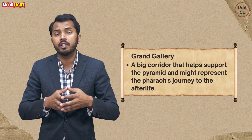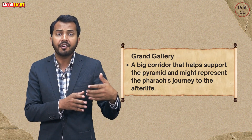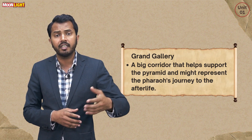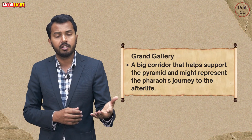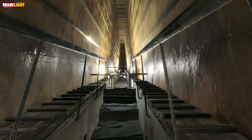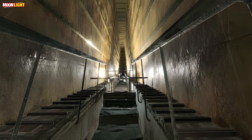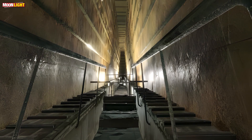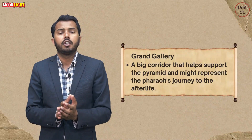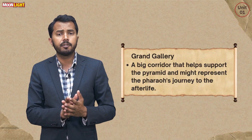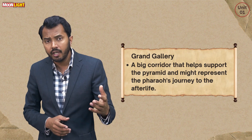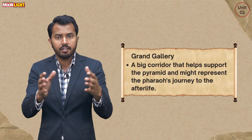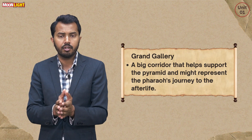The third chamber was a kind of Grand Gallery. We have multiple opinions regarding the Grand Gallery. One opinion is that it served as structural support for the pyramids. Another opinion is that it was related to the journey of the pharaoh or the king after death. So there are different opinions about it.